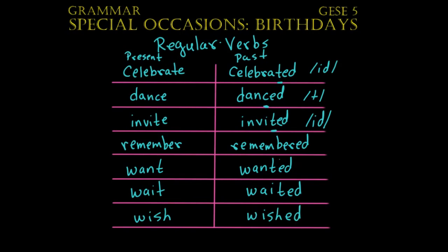Here we are going to look at the letter R, over here at the letter T, and over here we're going to look at SH. When we have the letter R, it's going to make the sound like D — remembered. But with T, it's the sound of 'id' — wanted, waited. And finally, with SH, we have the sound of D — wished.